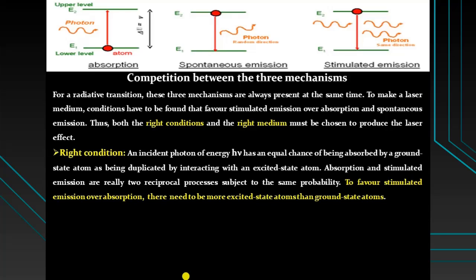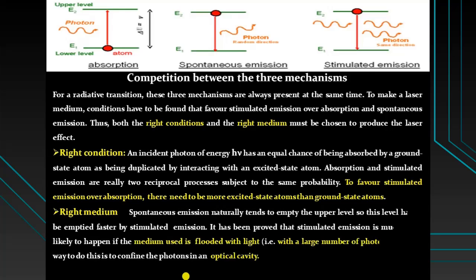Both absorption and stimulated emission have the same probability. But for laser production, there must be more stimulated emission, and to favor stimulated emission over absorption, there must be more excited state atoms than ground state atoms. This is the right condition for laser production. Stimulated emission and spontaneous emission both empty the upper levels, so this level must be emptied faster by stimulated emission.